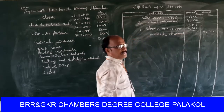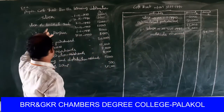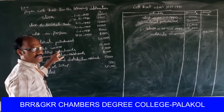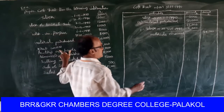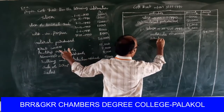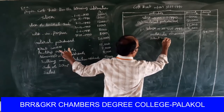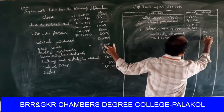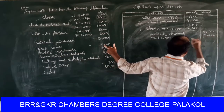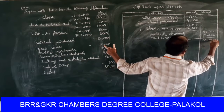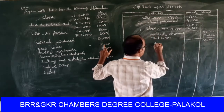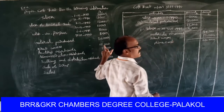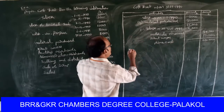Next, direct wages. Direct wages relate to prime cost. Direct wages amount is fifteen thousand rupees. So the total prime cost comes to sixty-four thousand rupees, which is to be treated as prime cost.